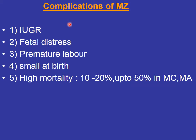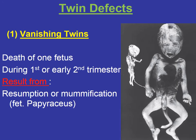Complications of monozygotic twins include intrauterine growth retardation, fetal distress, premature labor, small birth weight, and high mortality — especially in cases where twins share a single amniotic cavity and a single chorionic cavity.